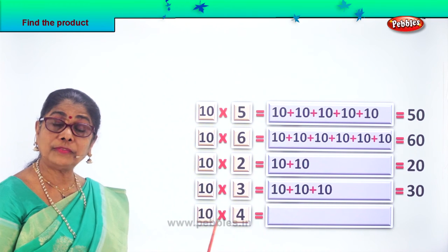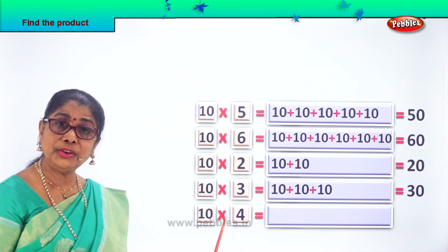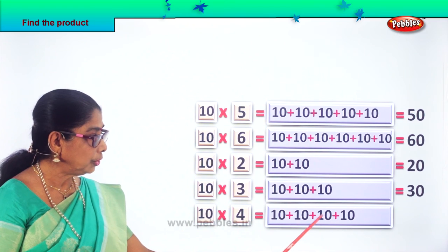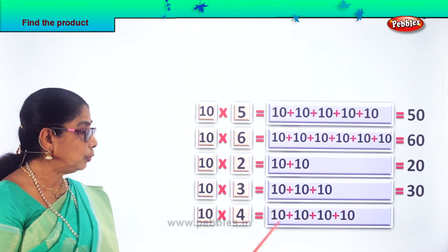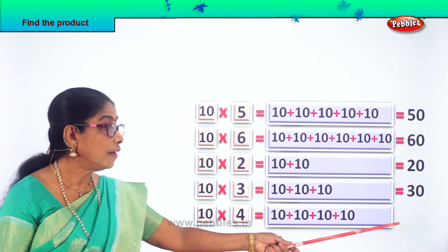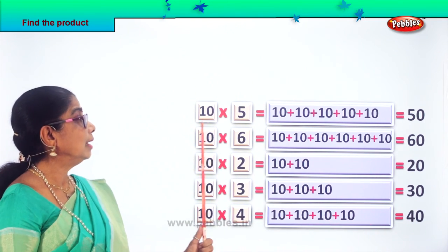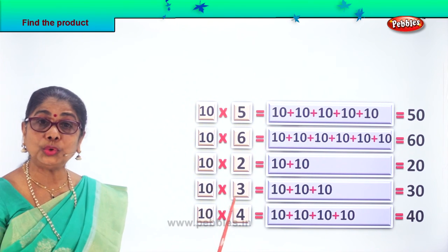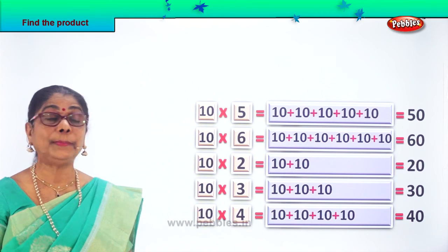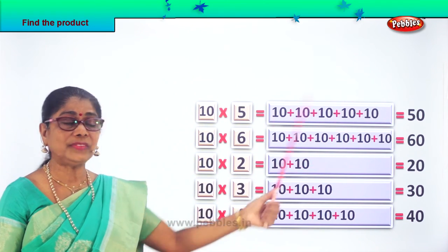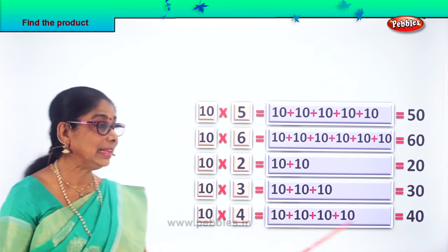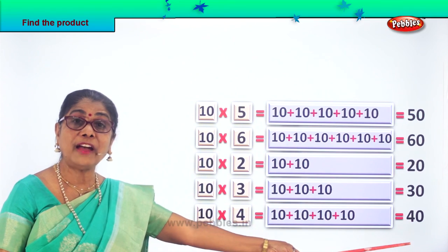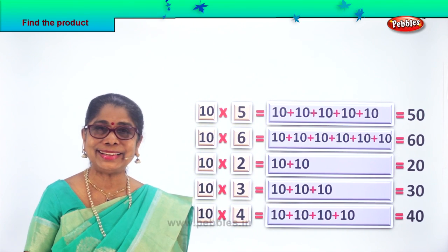Good. What is the product of 10 into 4? 10 into 4 — 10 fours: write 10 four times, 1, 2, 3, 4. 10 fours are equal to 40. Your answer is 40. Find the product of 10 into 5 — 50; 10 into 6 — 60; 10 into 2 — 20; 10 into 3 — 30; 10 into 4 — 40, using repeated addition. Did you enjoy the exercise? Good.